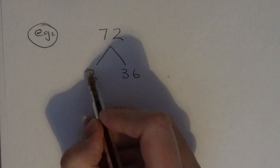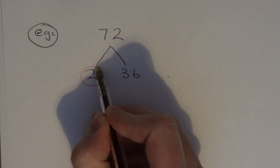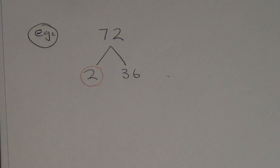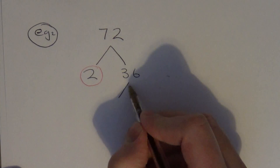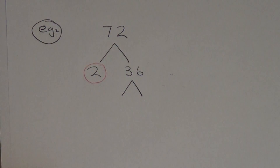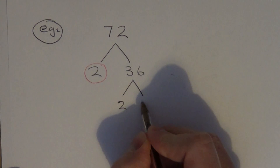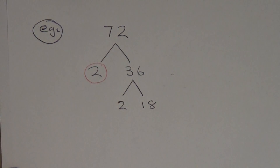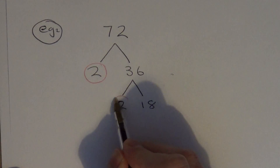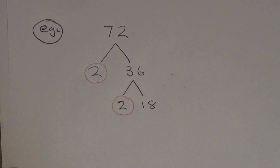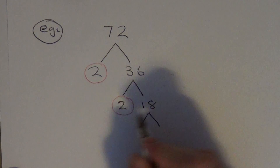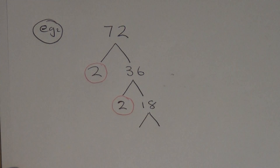2 is a prime number so circle it. 36 isn't prime so let's split this number up — again let's go with the 2 times table: 2 times 18. Again 2 is a prime number so circle it. 18 isn't prime so split it up — this time I'm going to go with 3 times 6.